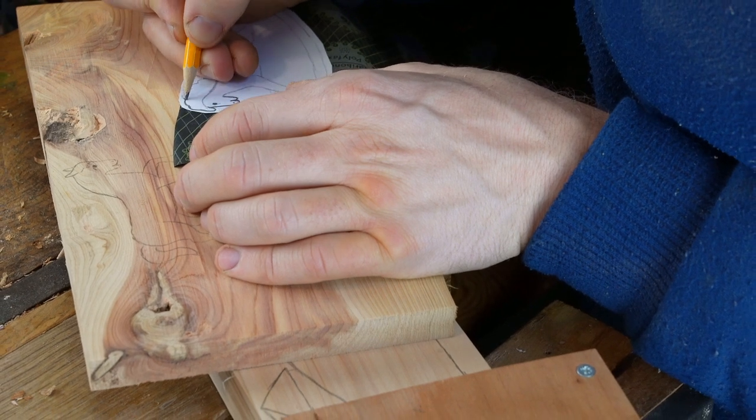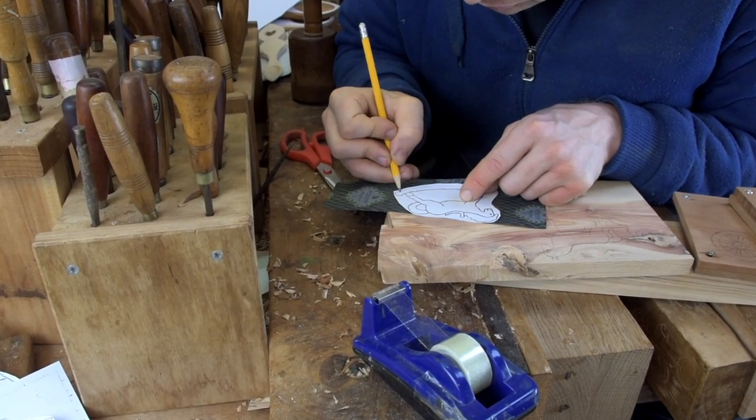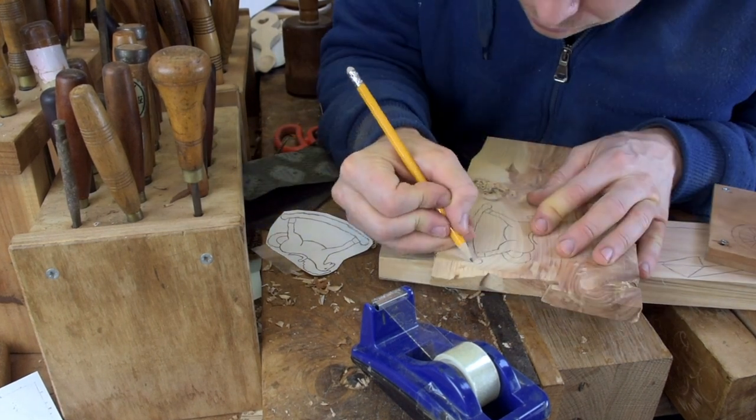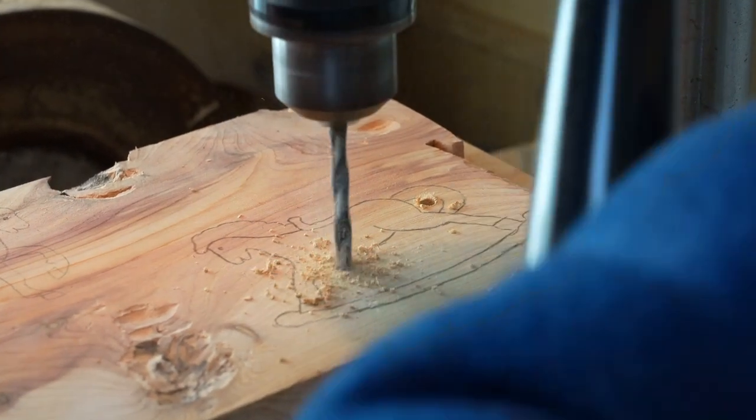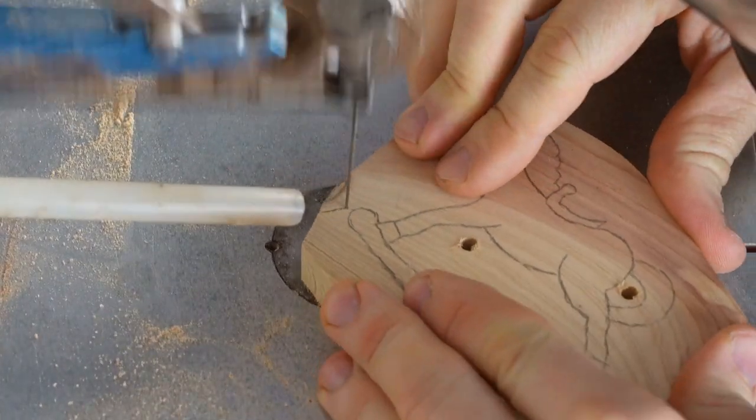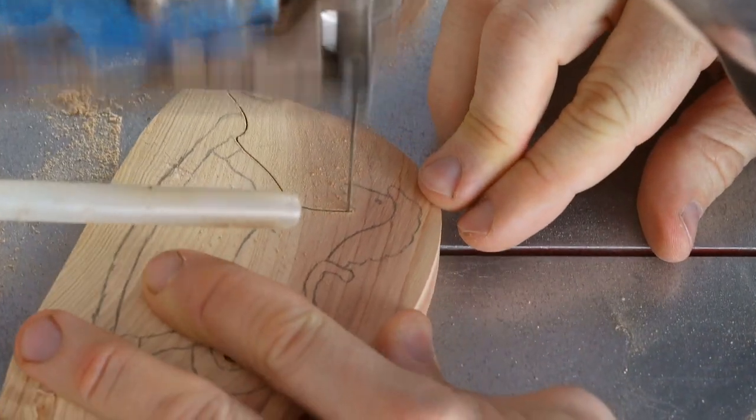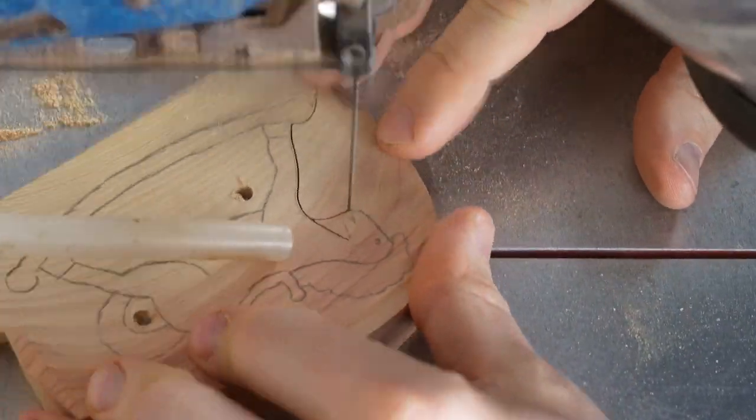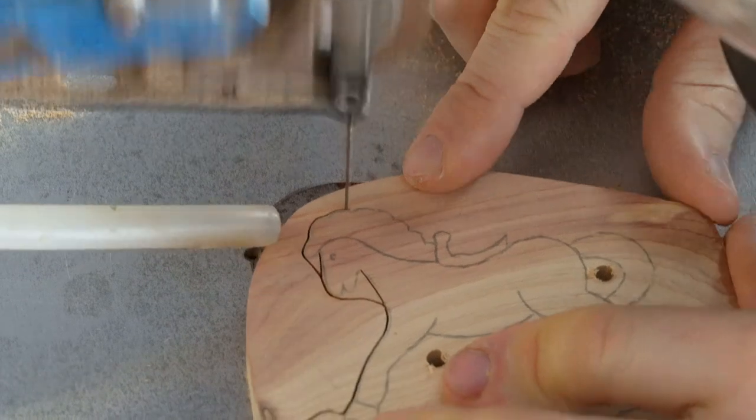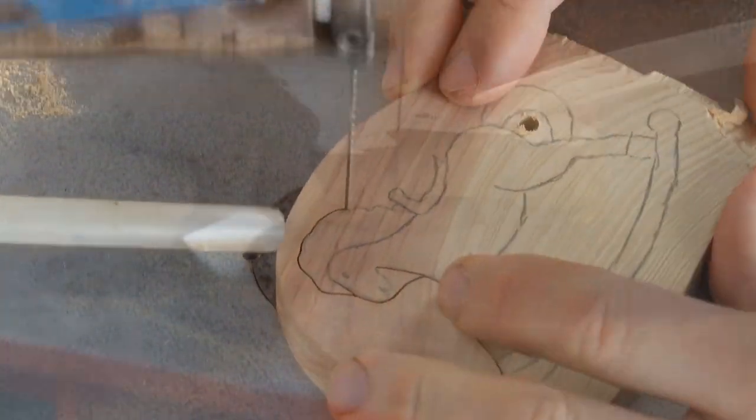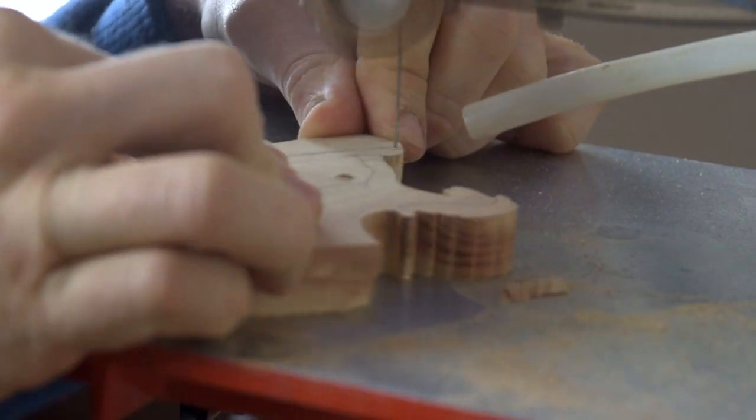Now on to our third project. Same process: you mark it all out on the woods using carbon paper or whatever it is that you're going to use to mark around. You then drill your pilot holes for the internal cuts that you're going to do, over to your scroll saw, and then you're cutting the basic outline. In this case it's a rocking horse, so you cut the outline of your rocking horse out on the scroll saw itself.